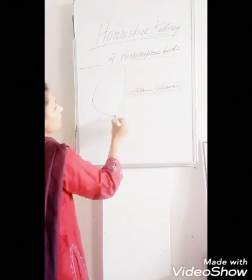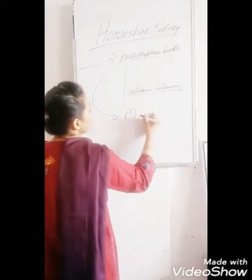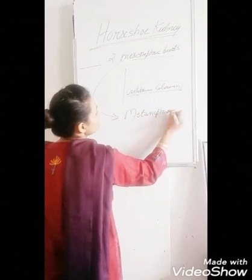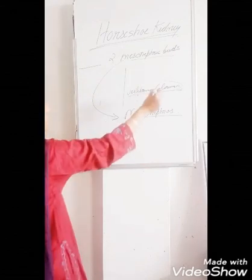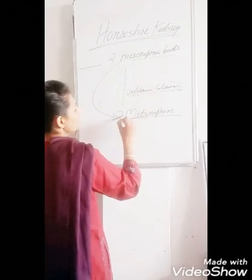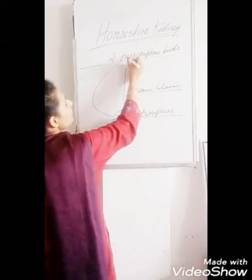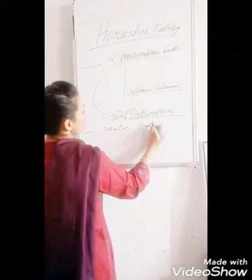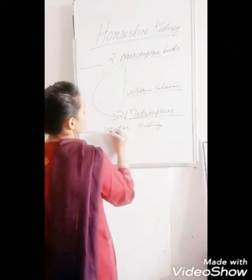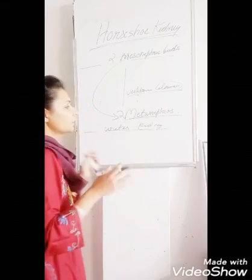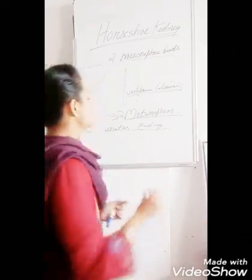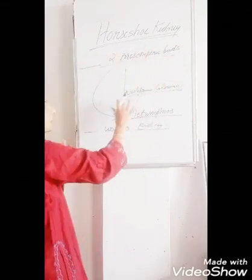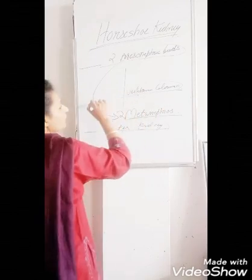These mesonephric buds will develop and grow into metanephros. So the two mesonephric buds will grow into two metanephros, forming the ureter and kidney. The pair of kidneys — total two kidneys, one on the left and one on the right — and the ureters are formed from the two mesonephric buds on either side of the vertebral column.